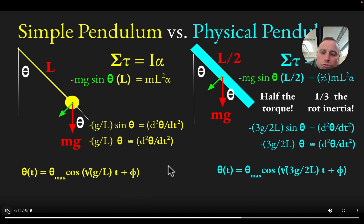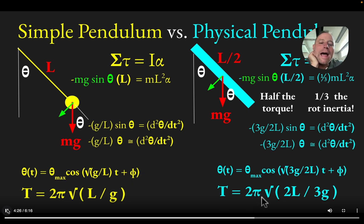And then these trig functions repeat every time the argument of the trig function gets to two pi. And so using that, you can get an expression for the period and you get two pi root L over G for the period of the simple pendulum and two pi root two L over three G. So in other words, the period is reduced by a factor of root two thirds for the physical pendulum.